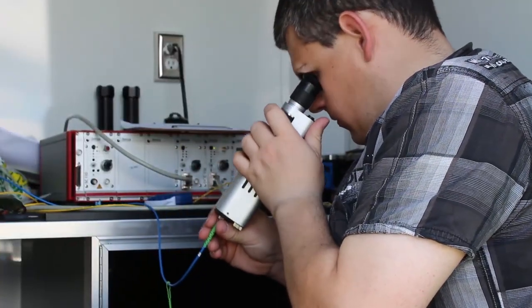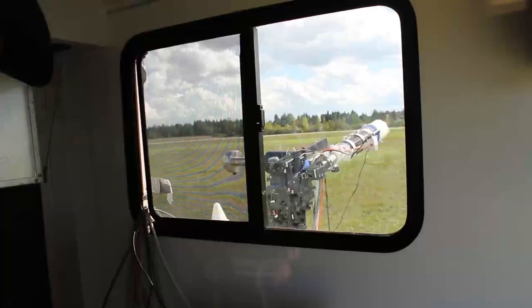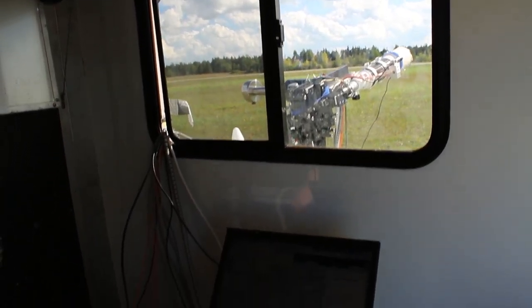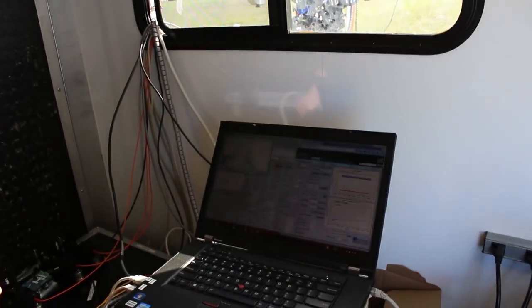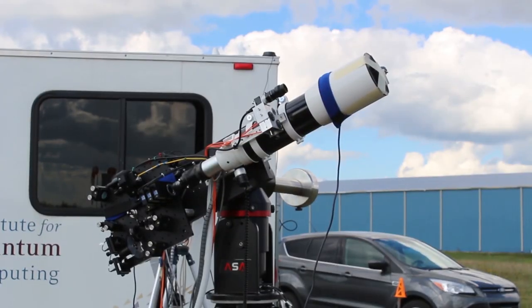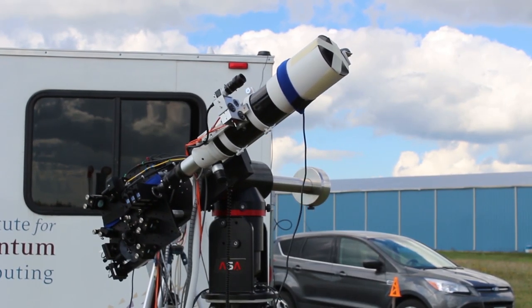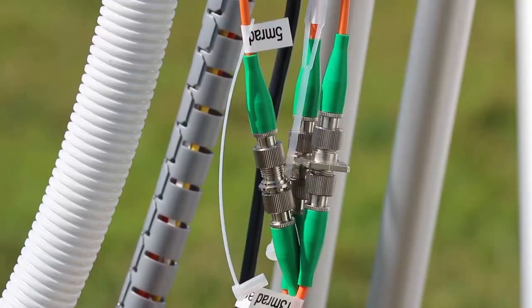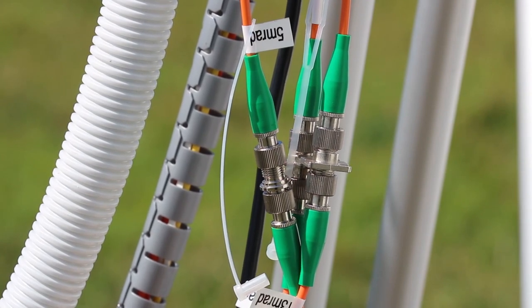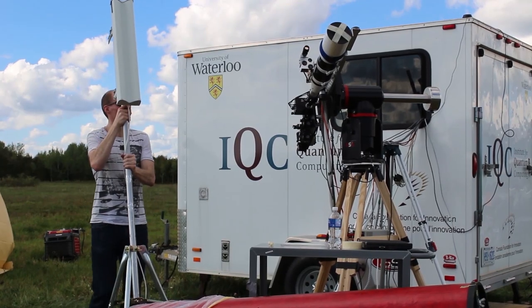The ground station consisted of the source, our coherent pulse source, which we used for generating the single photons. It also consisted of a pointing system and a polarization analysis system and compensation, so that between the source and the transmitter, we were able to compensate for any polarization drifts as the photons traveled through the fibers of the system. And then fortunately, once it gets to free space, you don't have to worry about polarization issues.